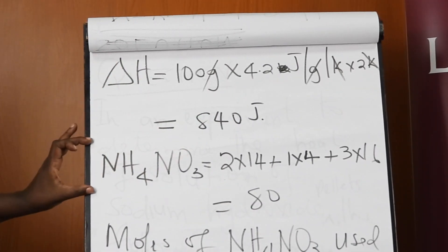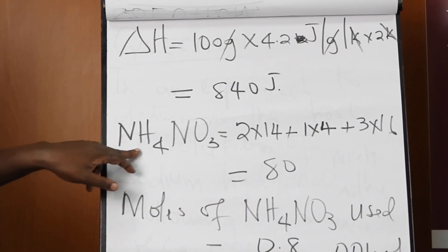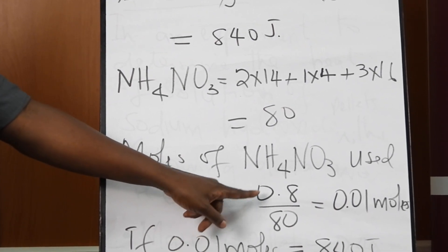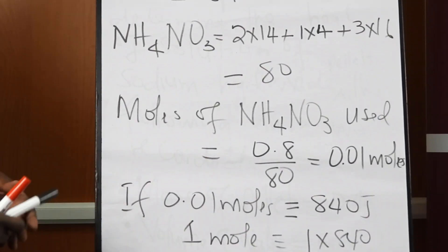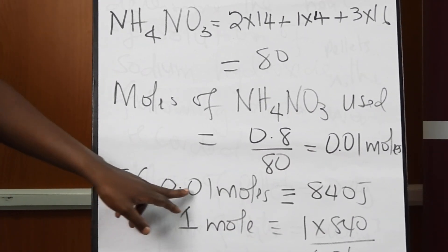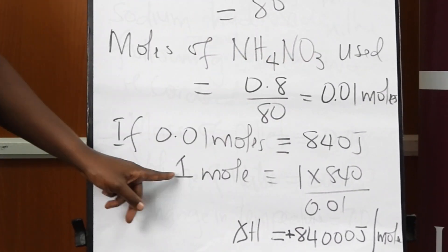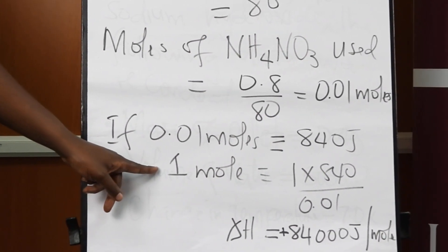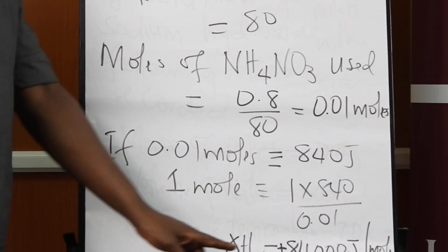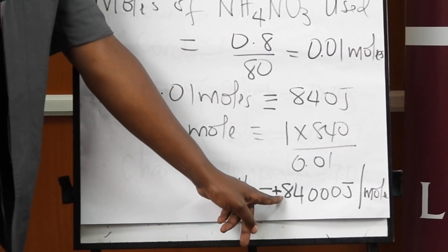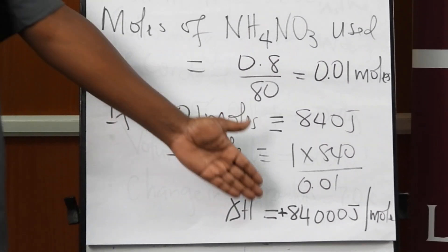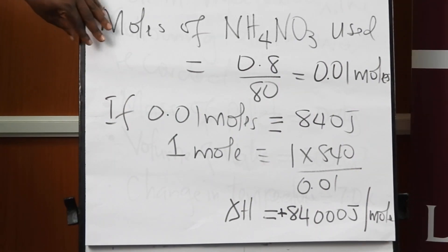Don't stop there. Calculate how many moles of ammonium nitrate were involved by dividing the mass by the relative formula mass. Then say: if those moles give that amount of energy, what about one mole? Remember the reaction was endothermic — temperature dropped — so you assign a positive sign. The answer is 8400 joules per mole, which you can also convert to kilojoules per mole.